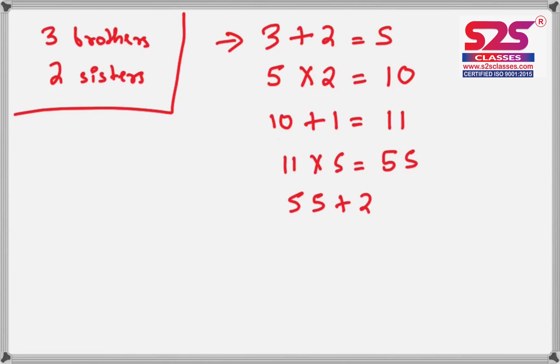Now tell them to subtract twenty-five from the number they are having. So here I am subtracting twenty-five from fifty-seven which will give me thirty-two.